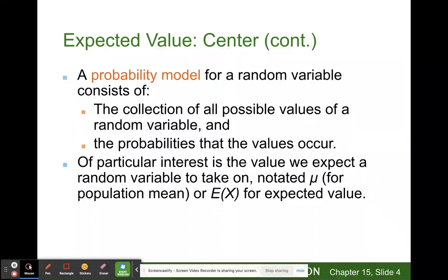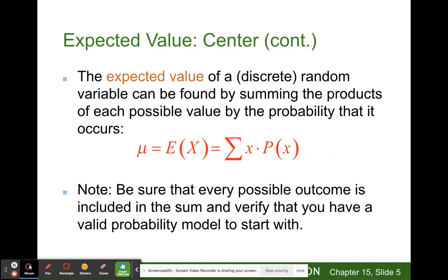A probability model of a random variable consists of the collection of all possible values of a random variable and the probabilities that those values occur. Of particular interest is the value we expect a random variable to take on, noted by mu (the Greek letter for population mean) or E(X) for the expected value.